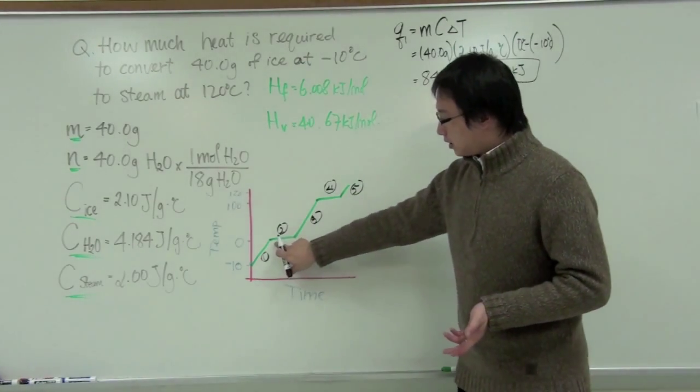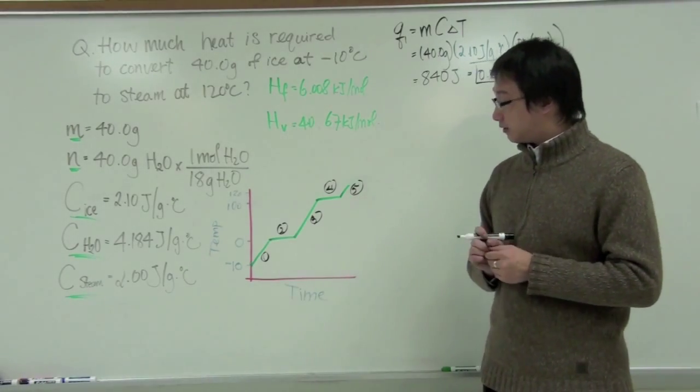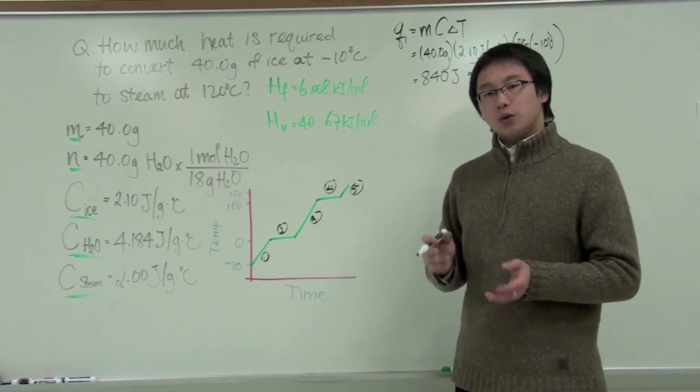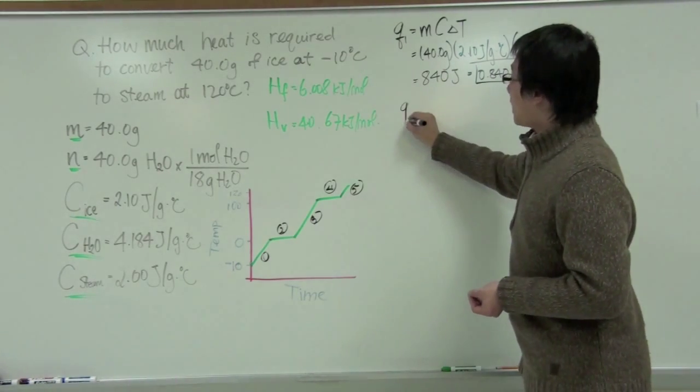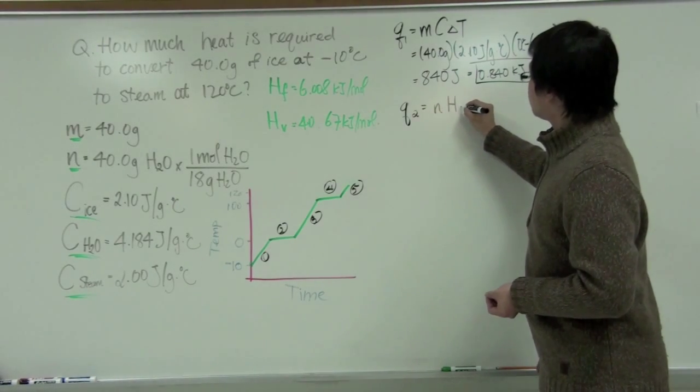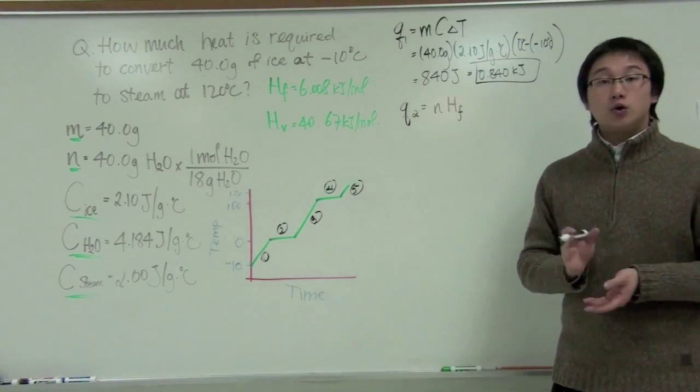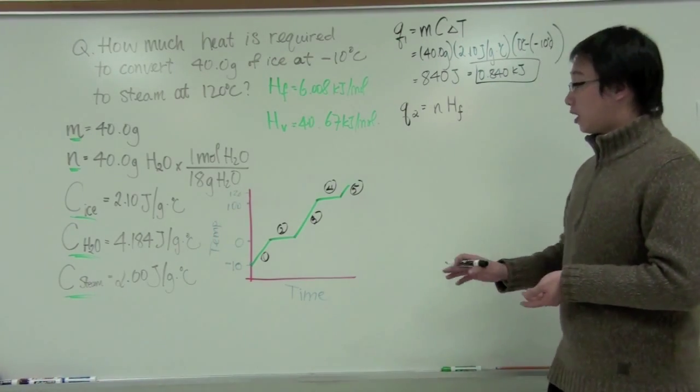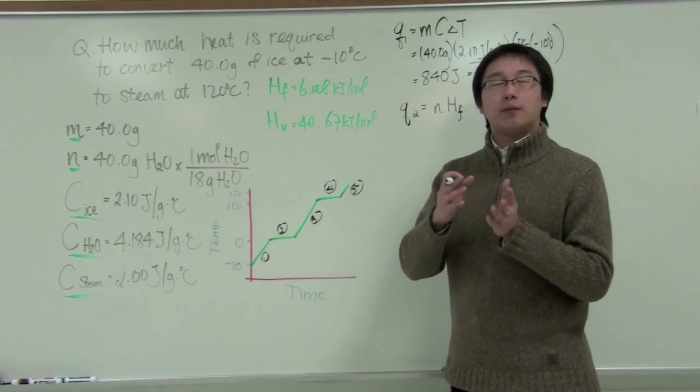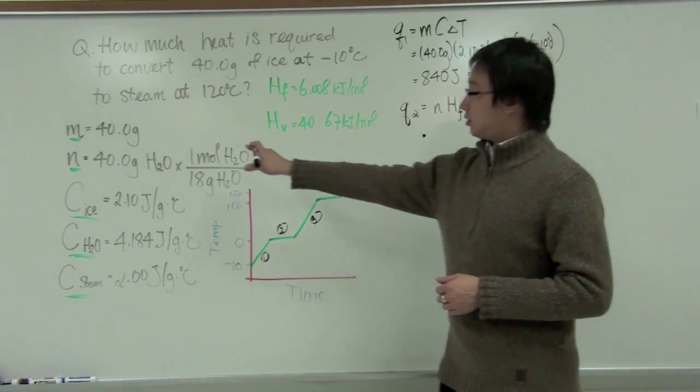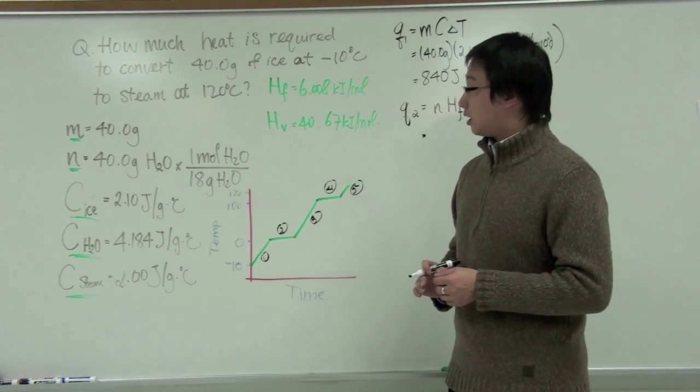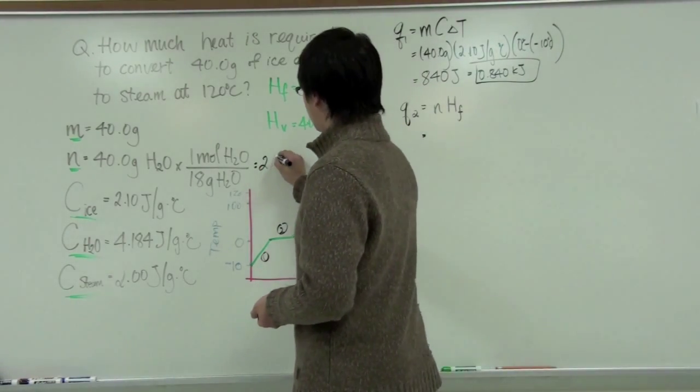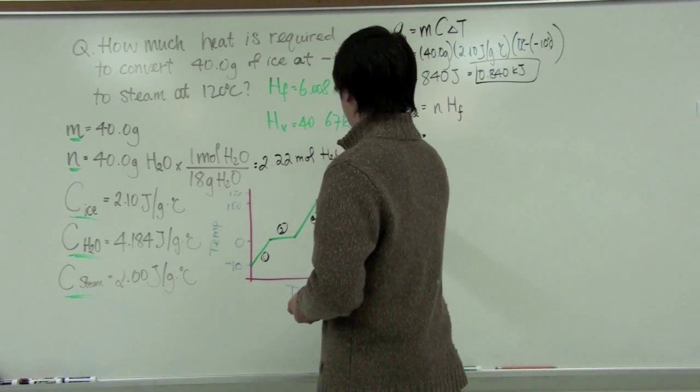The second part is the flat segment of the graph, and it indicates there is a change of state from ice to water. Since we have a change of state, the equation that we are going to use to calculate is Q equals the number of moles times the heat of fusion. Now, it is the heat of fusion in this case, because we are changing from ice to water. Now, on the left-hand side, you can see that I already changed the, I have the calculations ready to calculate how many moles. So if I do the calculations, it will give us 2.22 moles of H2O. So we can go ahead and put this here.